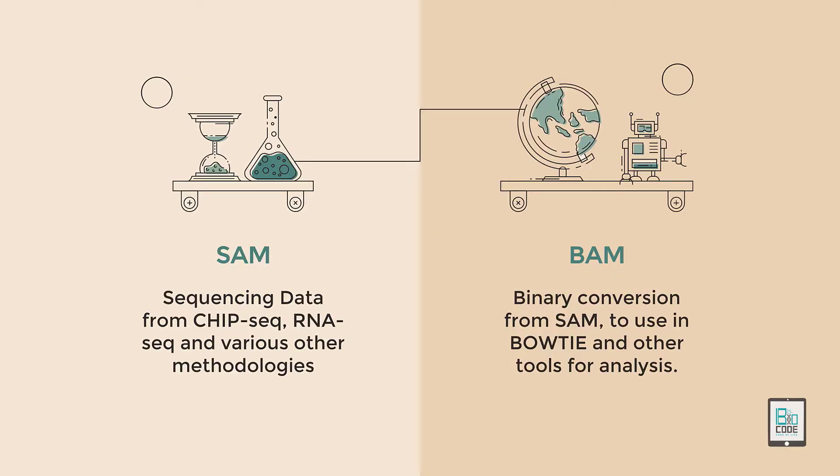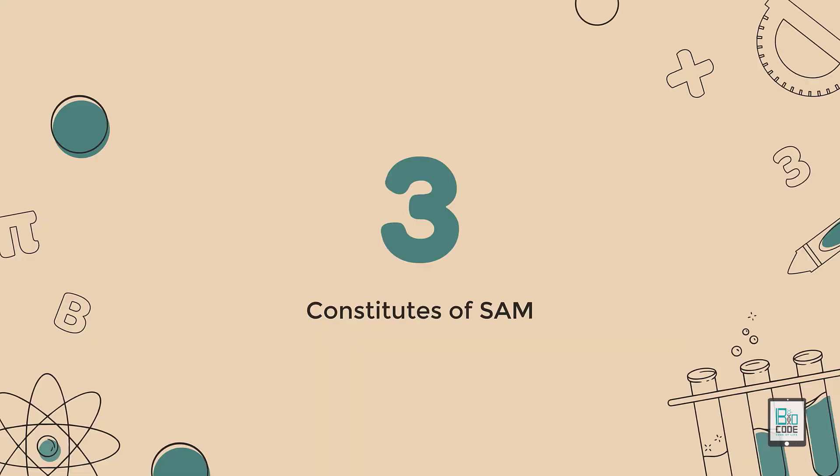SAM is used to store sequencing data from ChIP-seq, RNA-seq analysis, and other sequencing technologies or methodologies. BAM is the conversion of a SAM file into a binary or compressed format so that it can be used in tools such as Bowtie2 and various other tools for genomics analysis.